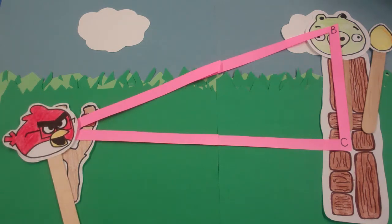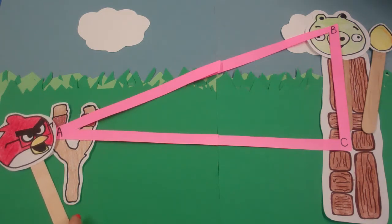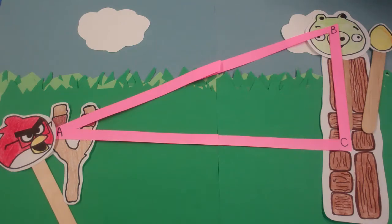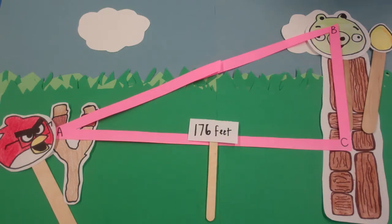The Angry Nerd knows the distance from his slingshot to the base of the pig's tower is 176 feet, and the pig's tower is 73 feet tall. But the Angry Nerd's slingshot is 16 feet off the ground, so he subtracts that from the height of the tower and gets 57 feet.